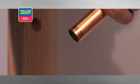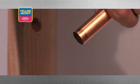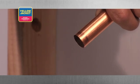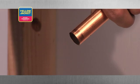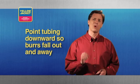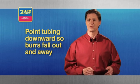Point the end of the tubing slightly downward. This allows gravity to work in your favor, encouraging the burrs to fall out and away from the tube. If the burrs fall inside the tubing as you remove them, you must take a moment and clear them out before continuing on.